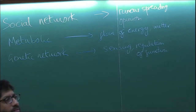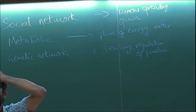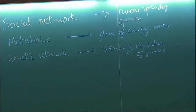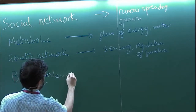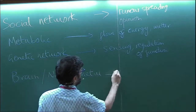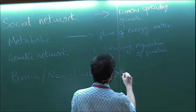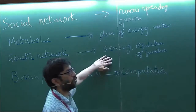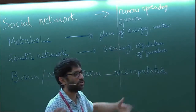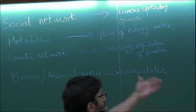Neural networks — everybody must have heard, especially with everyone talking about machine learning and deep neural networks. The brain, neural networks. Here it's again obvious there's lots of dynamics, and the dynamics is often involved in some kind of computation. Many of these networks do many different things — computation, as well as flow of information. Obviously the brain is doing all that.